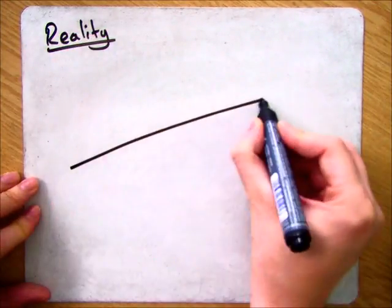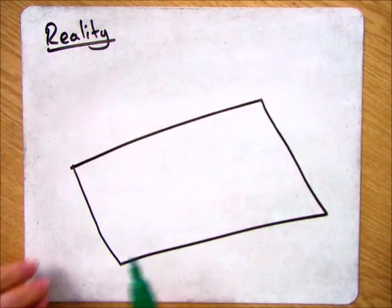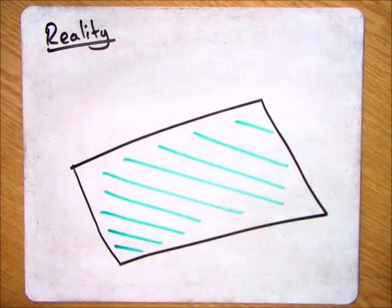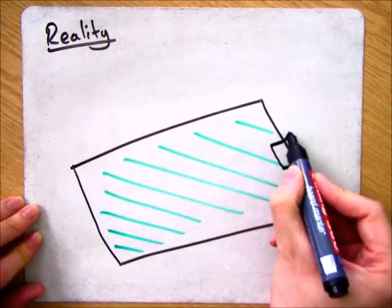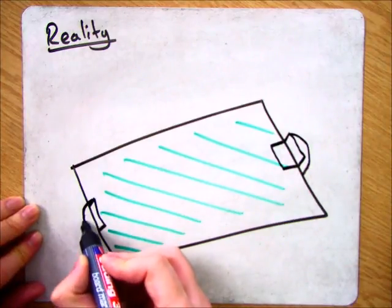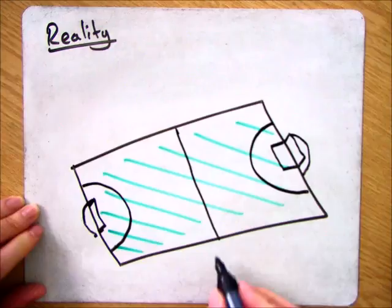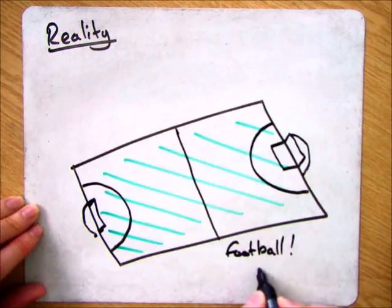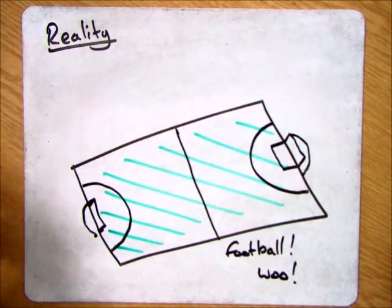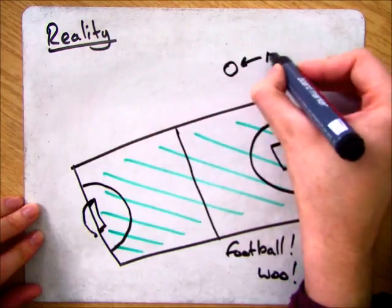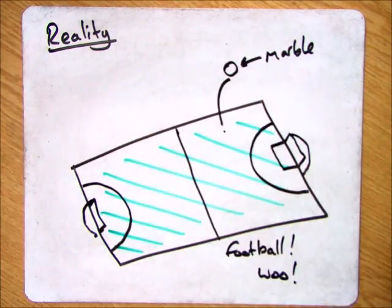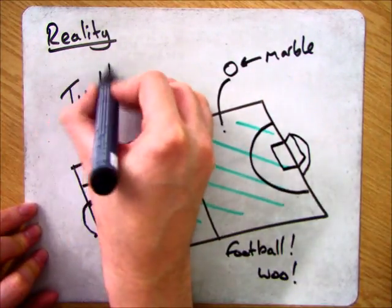Okay, so to get an idea of the sheer scale of the size of the nucleus compared to the atom, what I want you to do is imagine a football field. Any football field you want, Newcastle, St. James's Park might be a good one. That field is the size of the atom. And then, imagine putting a marble onto that field. It's tiny. It would be really almost impossible to find. And that represents the actual size of the nucleus itself, which is tiny.